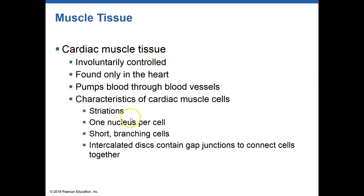Cardiac muscle is also striated for the same reason — those protein myofilaments and the way they run. Cardiac cells typically have one nucleus or may be binucleate. The cells are very short and they branch. It is considered involuntary because we can't control how fast or slow our heart pumps — that's not controlled by our thoughts. We can slow down our breathing because the diaphragm is skeletal muscle, and in doing so we might calm the body down, which helps to slow the heart. But the heart itself is involuntary — we don't have to think about it or tell it to beat, and we can't increase or decrease it just by our thoughts.